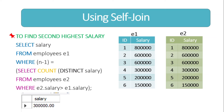Now let's see the third approach using a self join to find the second highest salary. Self join means we compare the employee table with itself. The query is: SELECT salary FROM employees E1 WHERE (n-1) = (SELECT COUNT(DISTINCT salary) FROM employees E2 WHERE E2.salary > E1.salary). To find the second highest salary, we substitute n=2, so n-1 equals 1.